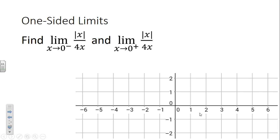Today we're going to talk about one-sided limits. Notice the new notation. We want to find the limit as x goes to zero from the left, where it's smaller, of the absolute value of x over 4x, and the limit as x goes to zero from the right of the absolute value of x over 4x. How do we start? Give us a hint.